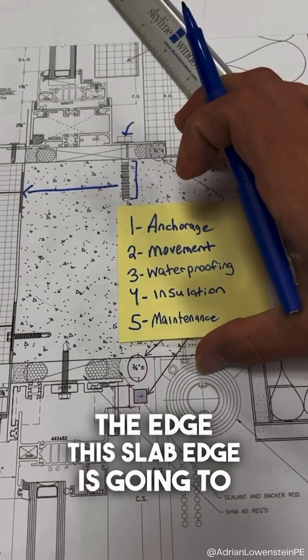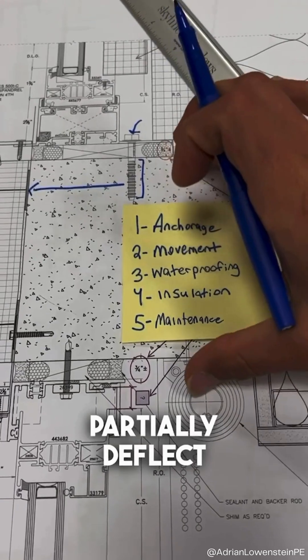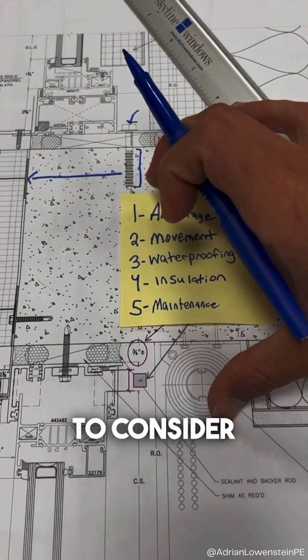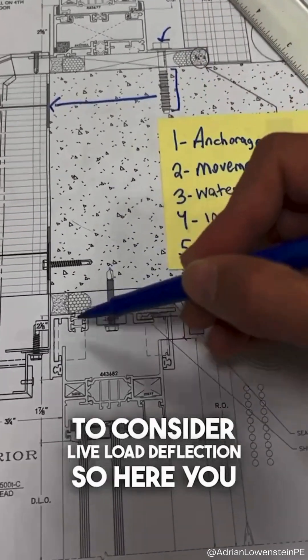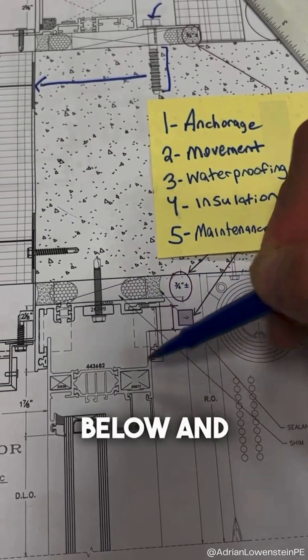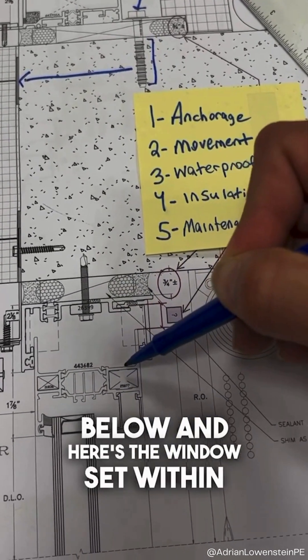this slab edge is going to partially deflect. And so we have to consider live load deflection. So here you can see we have a head receptor at the unit below and here's the window set within.